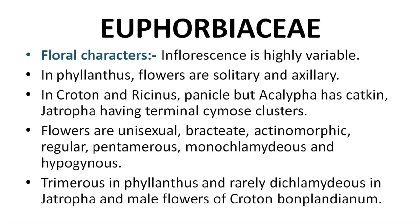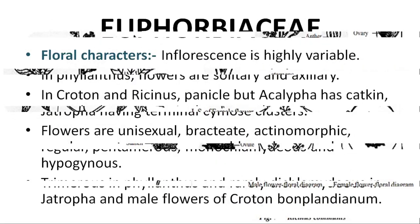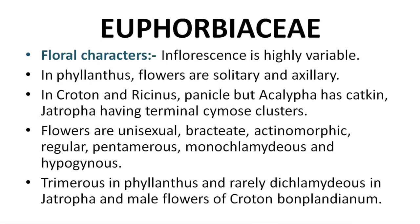Flowers are unisexual, bracteate, actinomorphic, and regular. Unisexual means either male or female flowers. Bracteate means having bracts. Actinomorphic means the flower can be divided into two equal halves. Regular flower. Pentamerous means 5 petals.